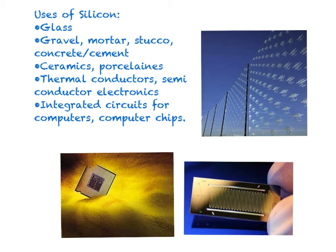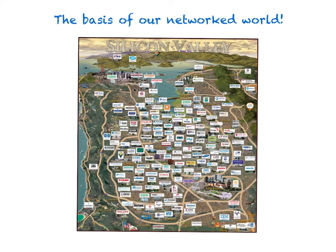There are so many uses for silicon that our world won't even be the same without it. Wherever we use sand, we use silicon. Silicon has long been used in the manufacturing of glass and concrete, which are made from sand. It is also used in clay ceramics and porcelain. Silicon's most important usage came about in the last century in the computer industry. Today, silicon is omnipresent in our life. Silicon is used in thermal conductors, semiconductor electronics, integrated circuits for computers, and most importantly, computer chips. Silicon is so powerful in today's world that entire geographies are shaped by it. The famous Silicon Valley in California was the birthplace of the computer industry and today forms the basis of our networked world.